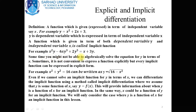Sometimes you may not be able to algebraically solve the equation for y in terms of x. And sometimes it is not convenient to express a function explicitly, but every implicit function can be expressed in explicit form. For example, x² + y² = 16 can be written as y = √(16 − x²). This means every explicit function can be expressed as an implicit function, but it is not necessary that every implicit function can be converted into explicit form.